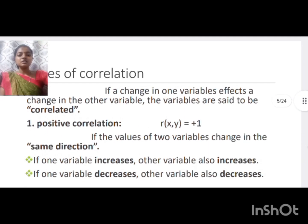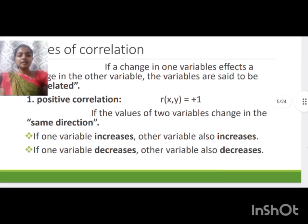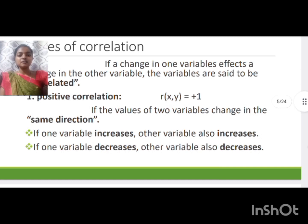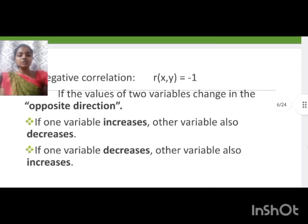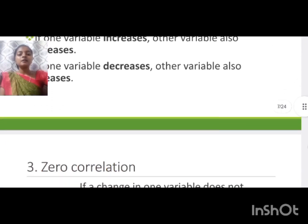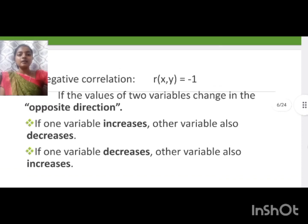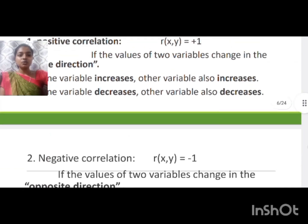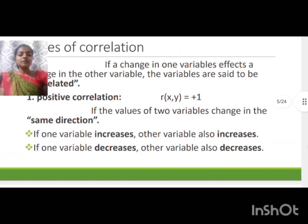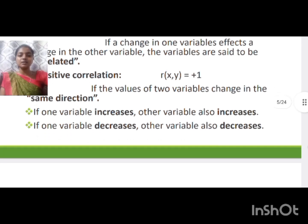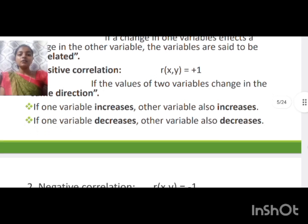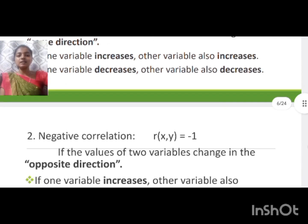There are three types of correlations: positive correlation, negative correlation, and zero correlation. In positive correlation, if the value of two variables changes in the same direction — if one variable increases, the other also increases; if one variable decreases, the other also decreases.